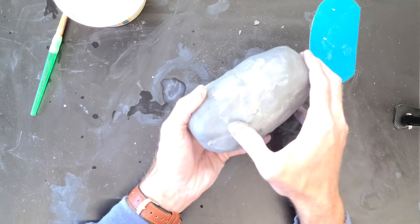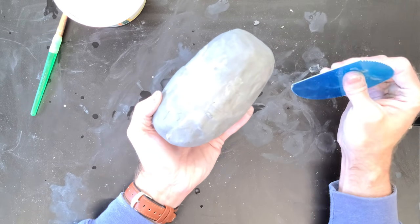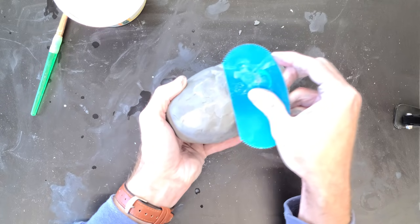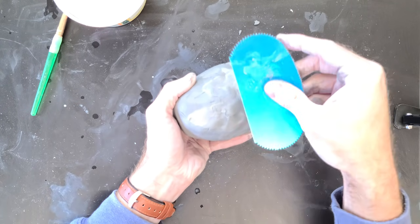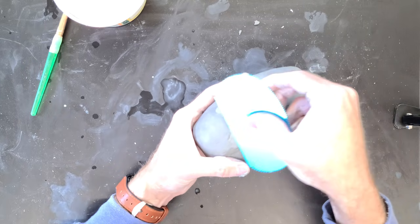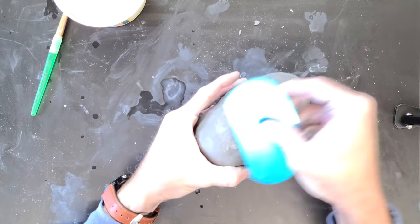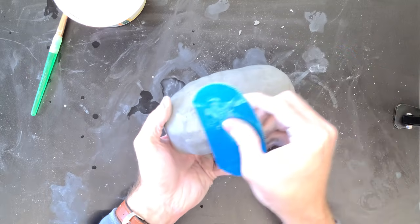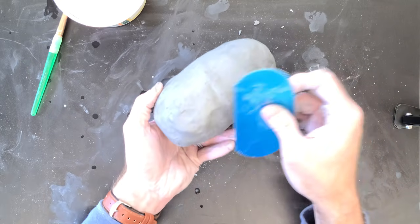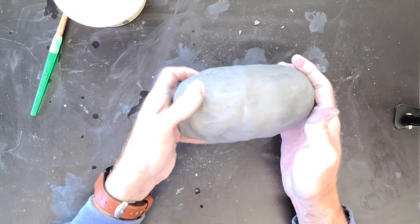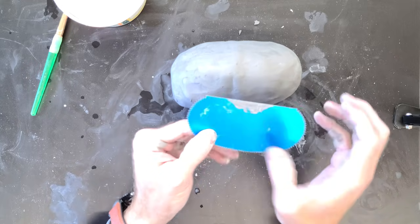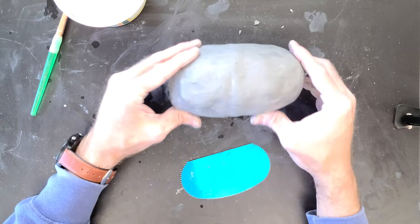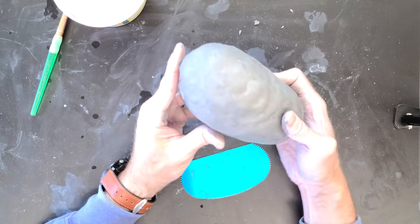They have other tools called a rib where it's thinner material. I can take this side that doesn't have any ridges and use it at an angle to make it smoother. There are several rib tools, metal ones and wooden ones. You can see how that's a lot more smooth than it was before. I have my body form now.